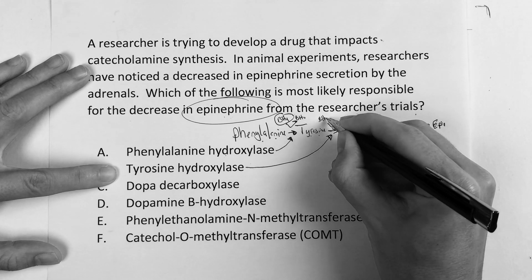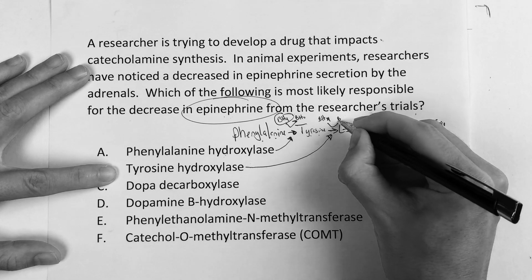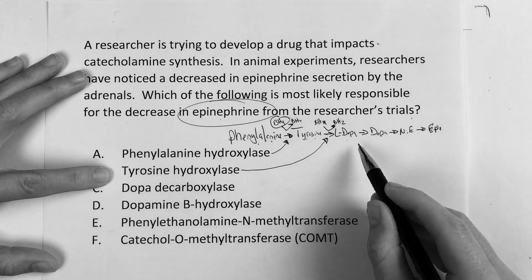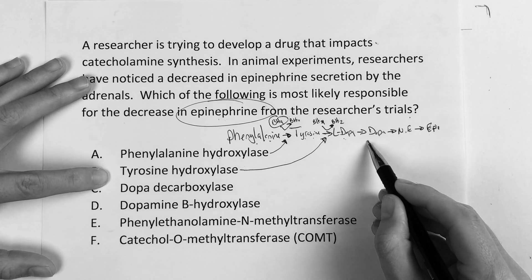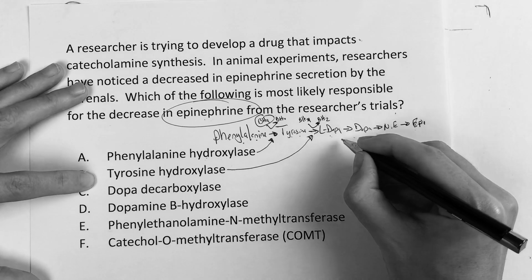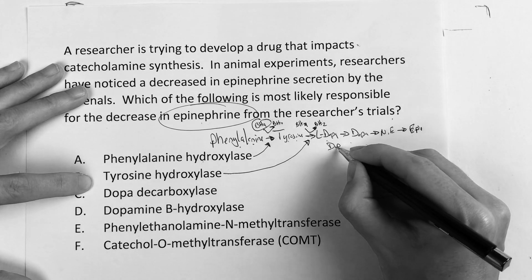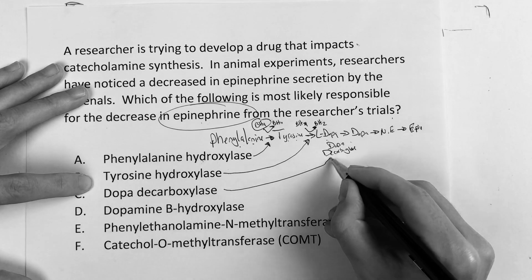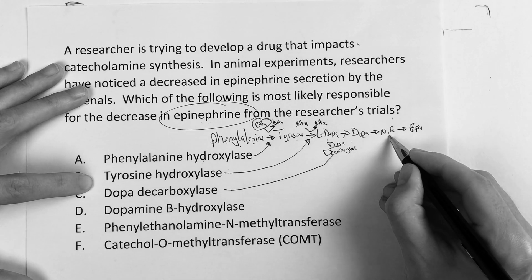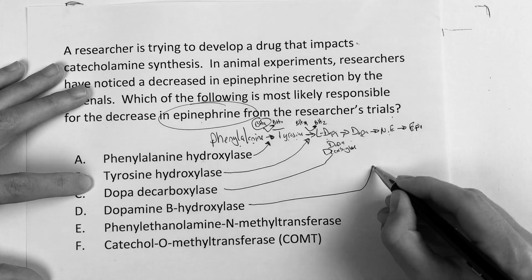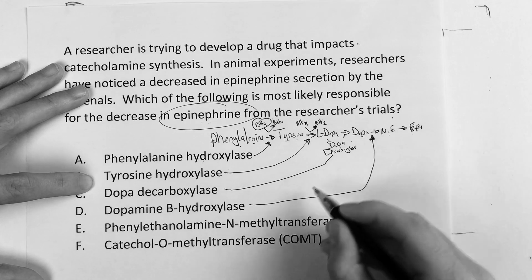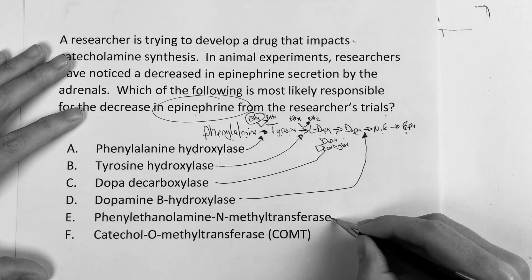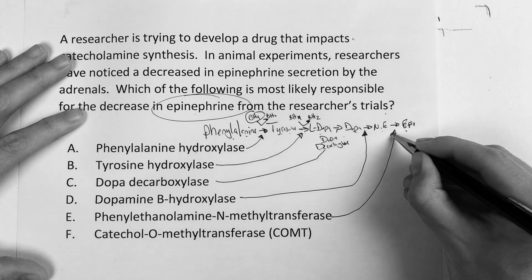Remember, the tyrosine-to-L-DOPA step can also use biopterin. The L-DOPA to dopamine conversion is from dopa decarboxylase. Then dopamine to norepinephrine comes from dopamine beta-hydroxylase. And then norepinephrine to epinephrine is going to be our phenylethanolamine N-methyltransferase — it's a mouthful.